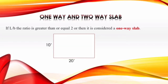The length of the slab is 20 feet and the breadth is 10 feet. So 20 divided by 10 gives you 2. Since the length-to-breadth ratio is equal to 2 or greater than 2, this slab will be called a one-way slab.